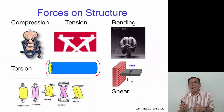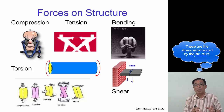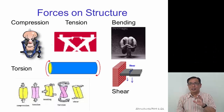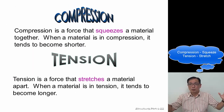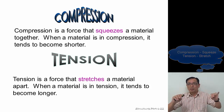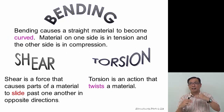When force acts on a structure, there are five possible outcomes: compression, tension, bending, torsion, and shear. Compression is the force that squeezes the material, making it shorter. Tension is stretching — like a rubber band when stretched, it gets thinner and longer. Bending: when an object is bent, one side experiences compression and the other side experiences tension.